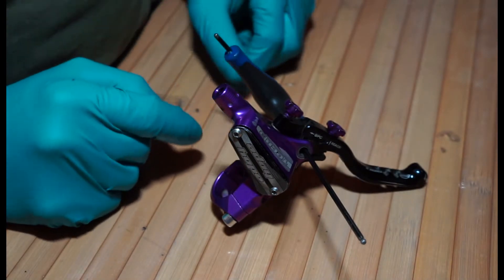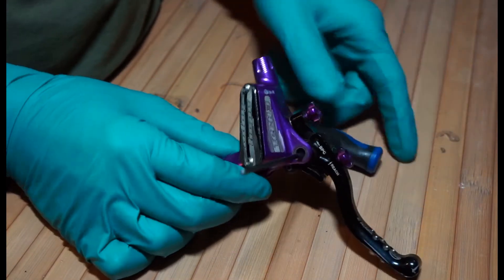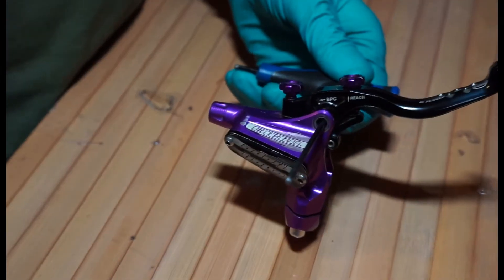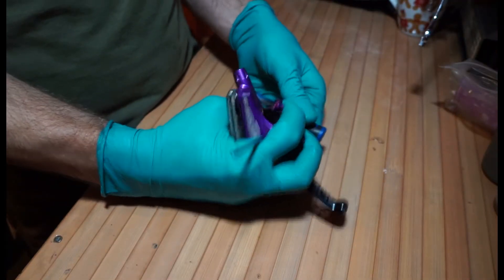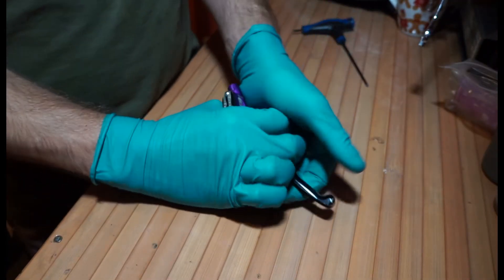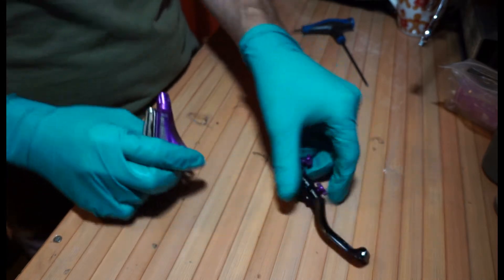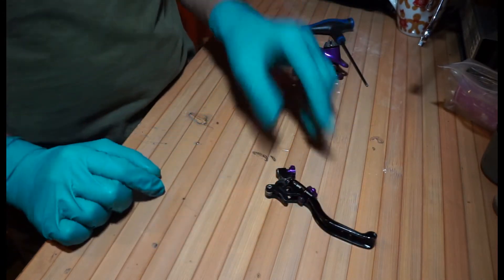Once we remove this allen key from the lever, there's a little spring in here, and the lever might shoot off. We're just going to grab that. Hold that. And there's your lever blade assembly.